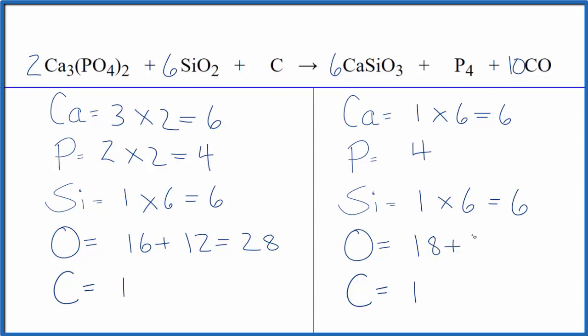Carbons, one times ten, that's ten, but that's easy to fix because it's all by itself. We just put a ten here, one times ten is ten, and we're done. This equation is balanced. Trick here, since carbon's by itself, leave it to last.